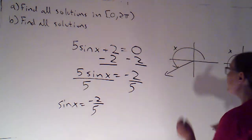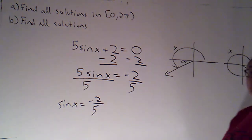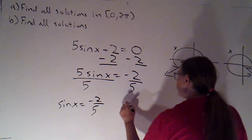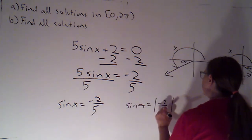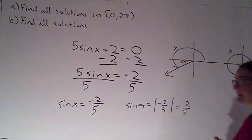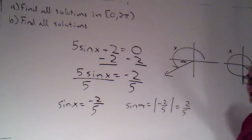However, my reference angle, both of these are going to have the same reference angle here. What I know about that is that sine of alpha is the absolute value of negative 2 fifths, which is 2 fifths. I can use arc sine to describe the reference angle. And that's generally what I'm going to do even if I'm working with a function like cosine.